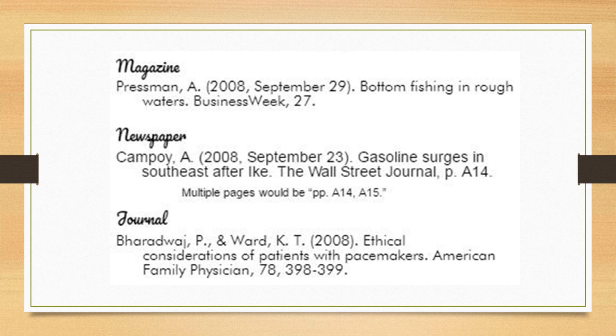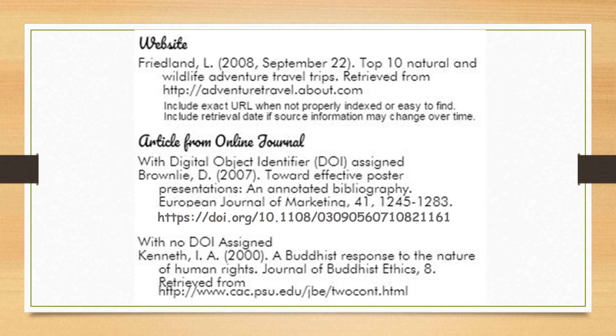Pause the video at any point to review these examples. For our library's digital resources, look for the citation tools within the databases — it will save you time in formatting and allow you to capture all the relevant information about your resource. Other online tools for citation tracking include EndNote, EasyBib, or Citation Machine. Talk to a librarian or someone from the writing lab about these resources if interested in using them during your research process.